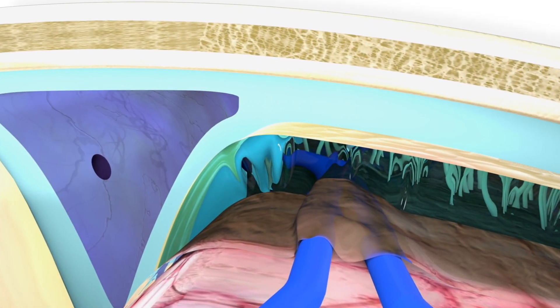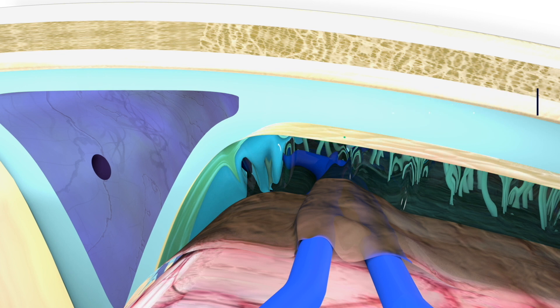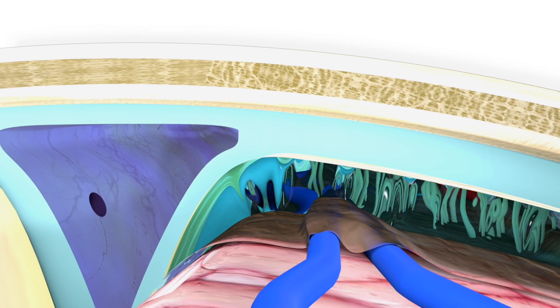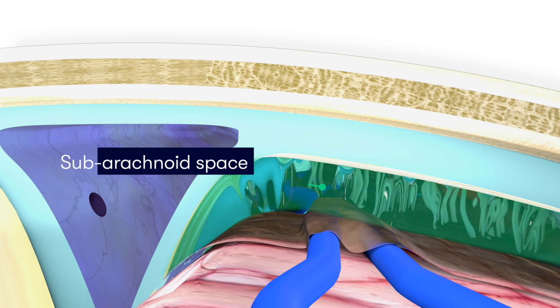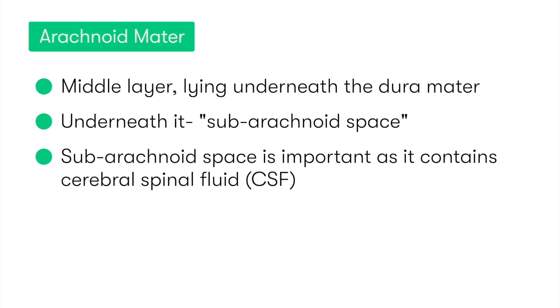Moving inwards, the next layer of the meninges is the arachnoid mater, which is the middle layer and lies directly underneath the dura. Underneath the arachnoid mater is a space referred to as the subarachnoid space, which is important because it contains the cerebrospinal fluid or CSF. It is this fluid which helps to cushion the brain during movement.